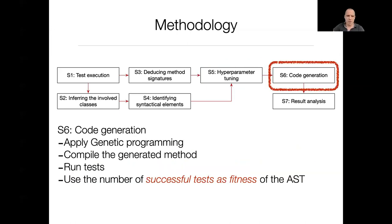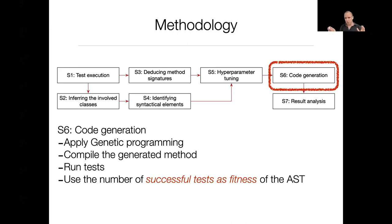We then generate code using genetic programming, compile all generated methods, fill the hole in the application with each individual from our population, run the tests, and identify the best individual.